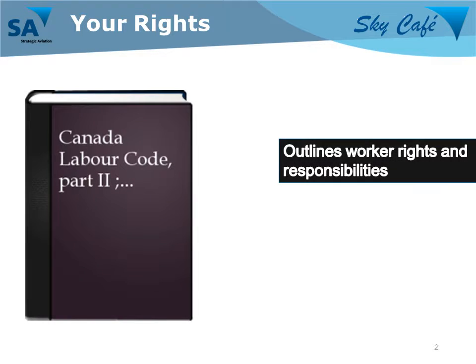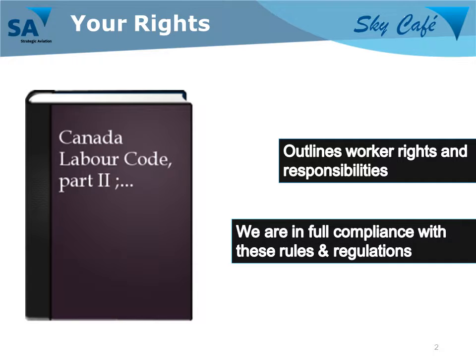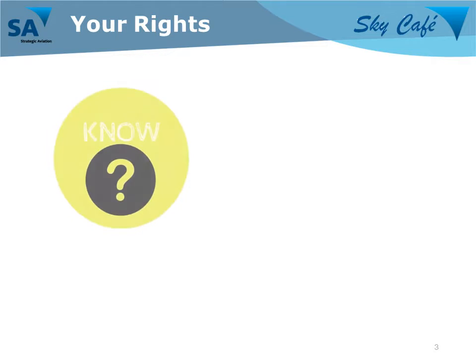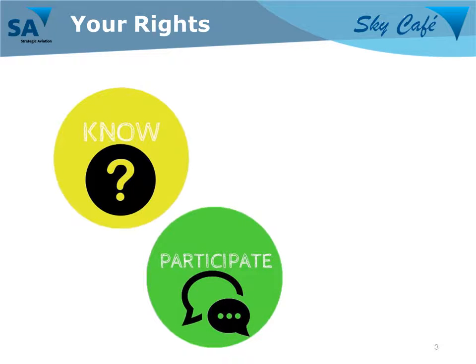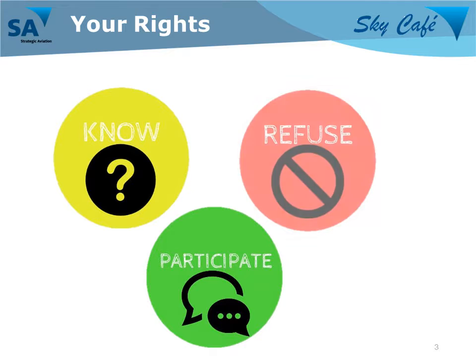The Canada Labour Code outlines worker rights and responsibilities, and we operate in compliance with these rules and regulations. These regulations help to set out our work practices and procedures that help keep you safe at work. As a worker, you have the right to know information about hazards you may face in your position. You also have the right to participate in safety at your workplace, and the right to refuse unsafe work.